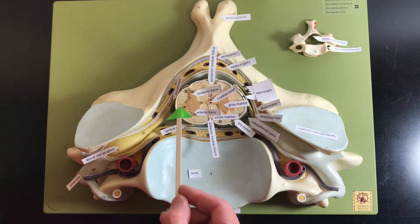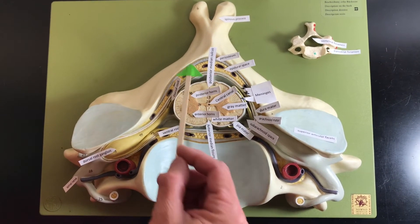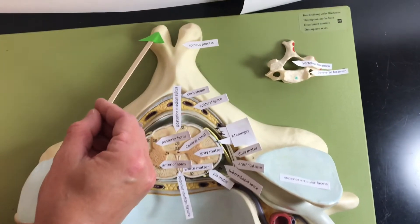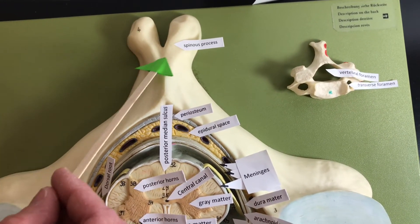We can see the spinal cord that's in the vertebral foramen. We know this is cervical because it has a bifurcation on the spinous process.